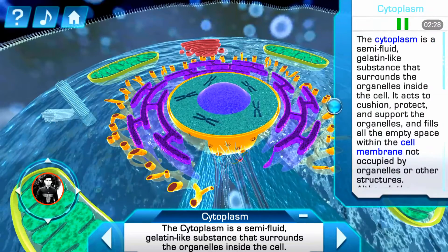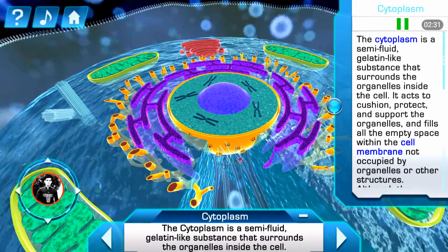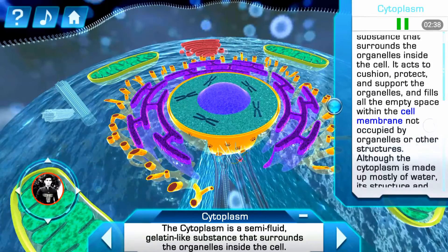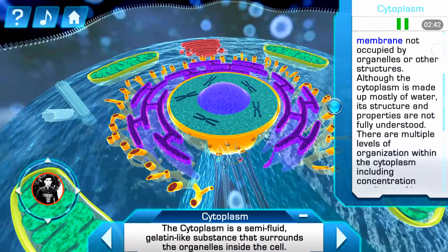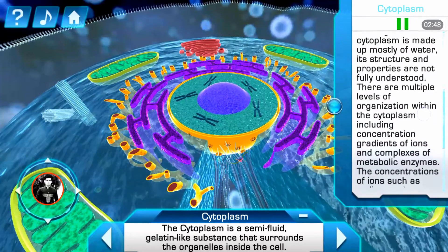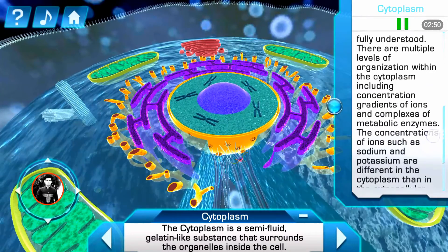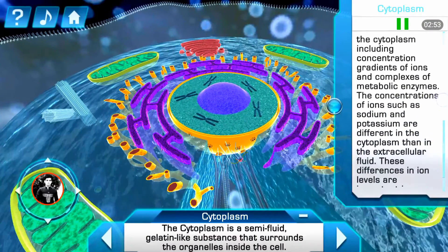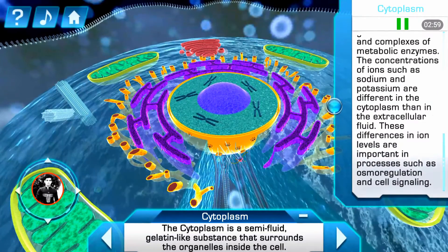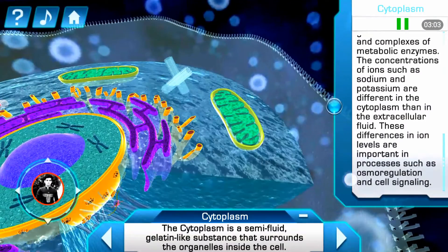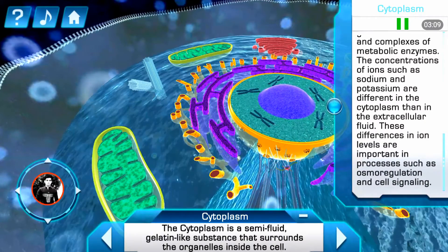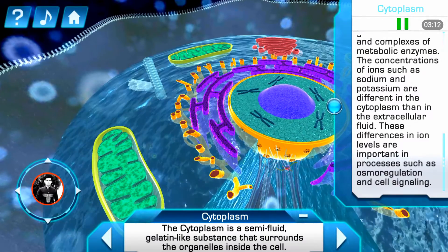The cytoplasm is a semi-fluid, gelatin-like substance that surrounds the organelles inside the cell. It acts to cushion, protect, and support the organelles, and fills all the empty space within the cell membrane not occupied by organelles or other structures. Although the cytoplasm is made up mostly of water, its structure and properties are not fully understood. There are multiple levels of organization within the cytoplasm, including concentration gradients of ions and complexes of metabolic enzymes. The concentrations of ions such as sodium and potassium are different in the cytoplasm than in the extracellular fluid; these differences are important in processes such as osmoregulation and cell signaling.